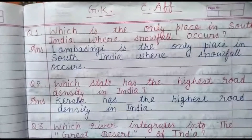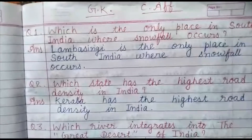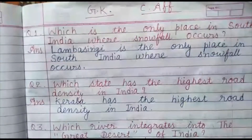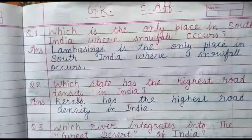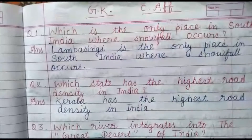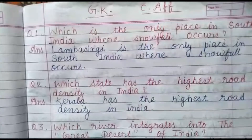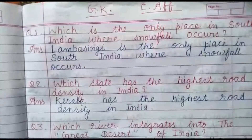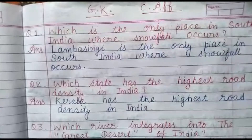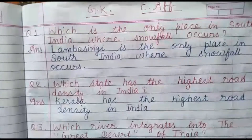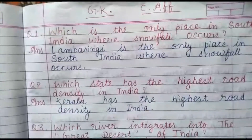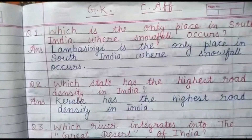Which is the only place in South India where snowfall occurs? Its answer is Lambi-Singhi is the only place in South India where snowfall occurs.